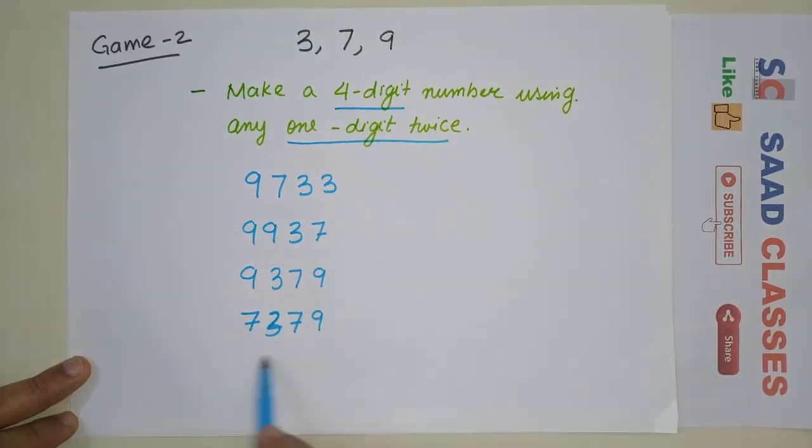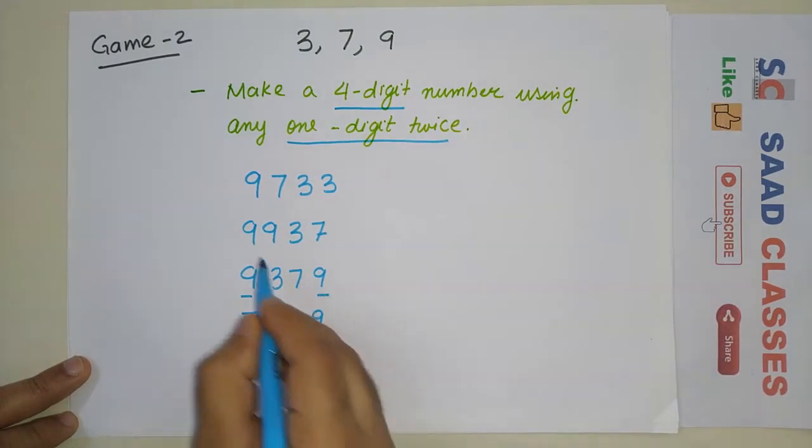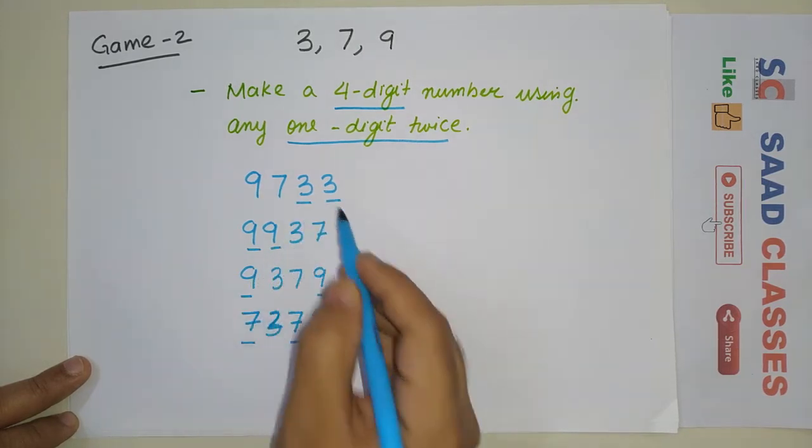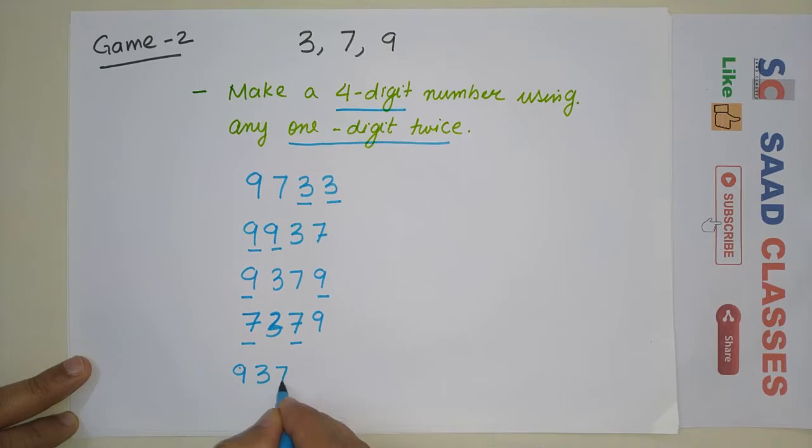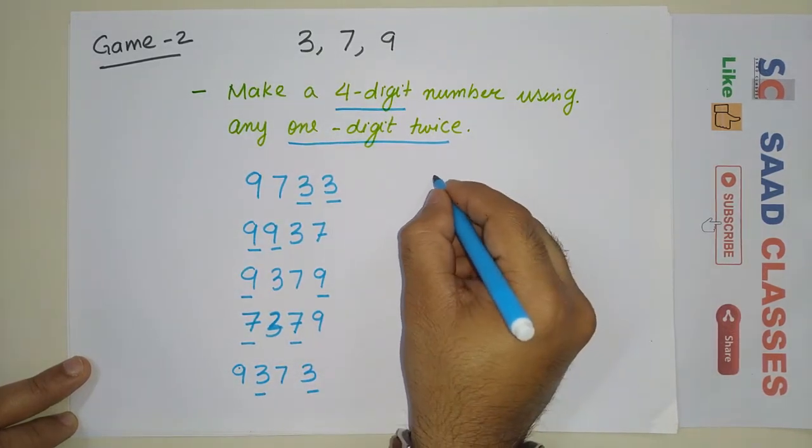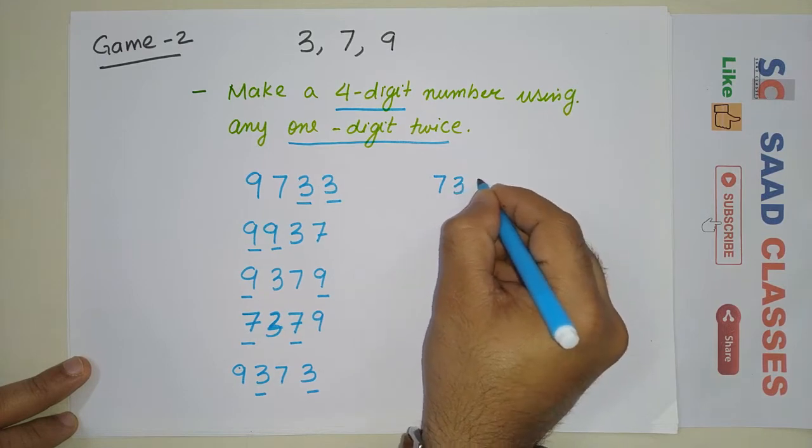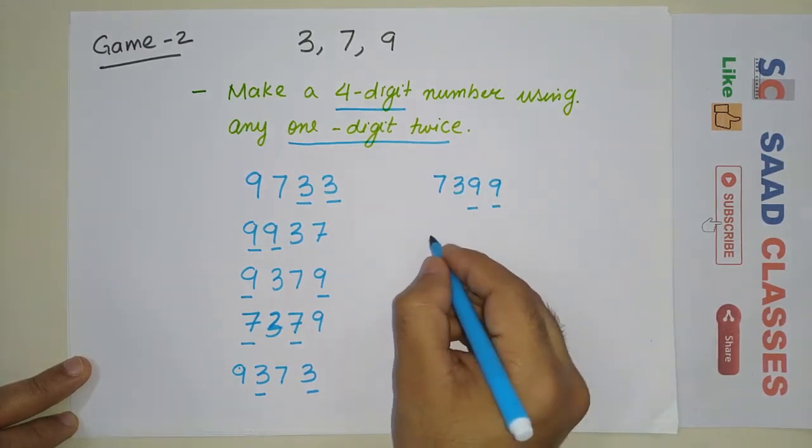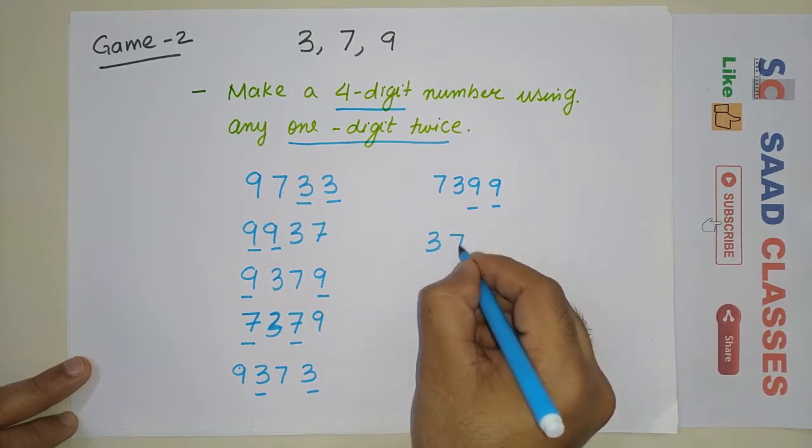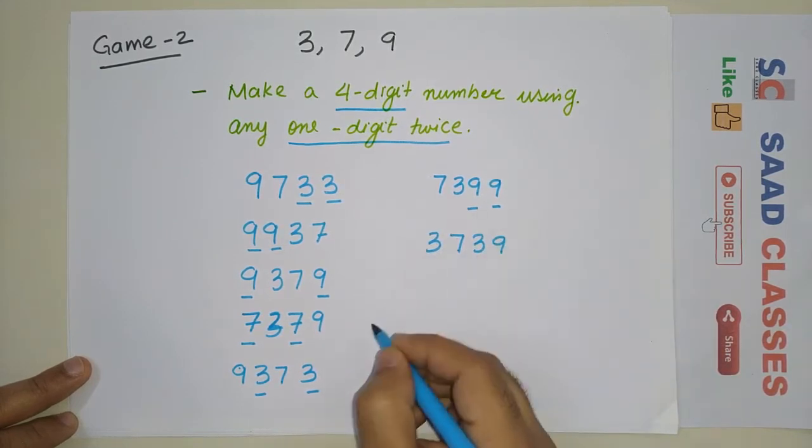This one is used two times here. Let's make another number: 9373. I can make this number. Let's make another: 7399 with nine two times, and I can write another number: 3739.